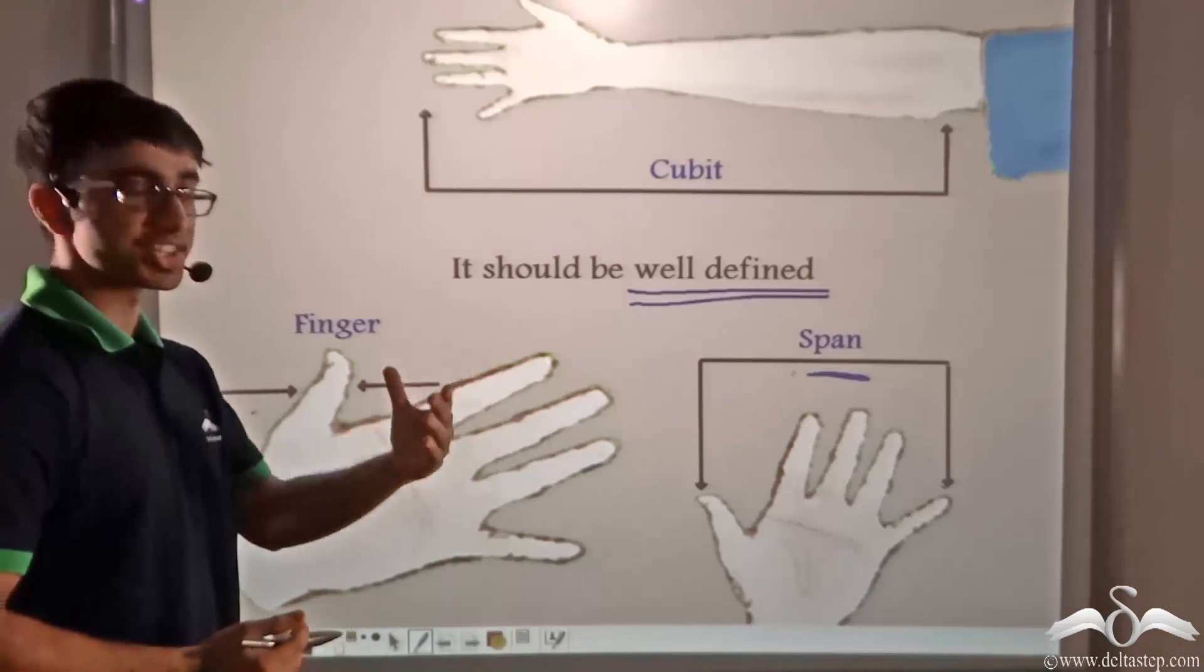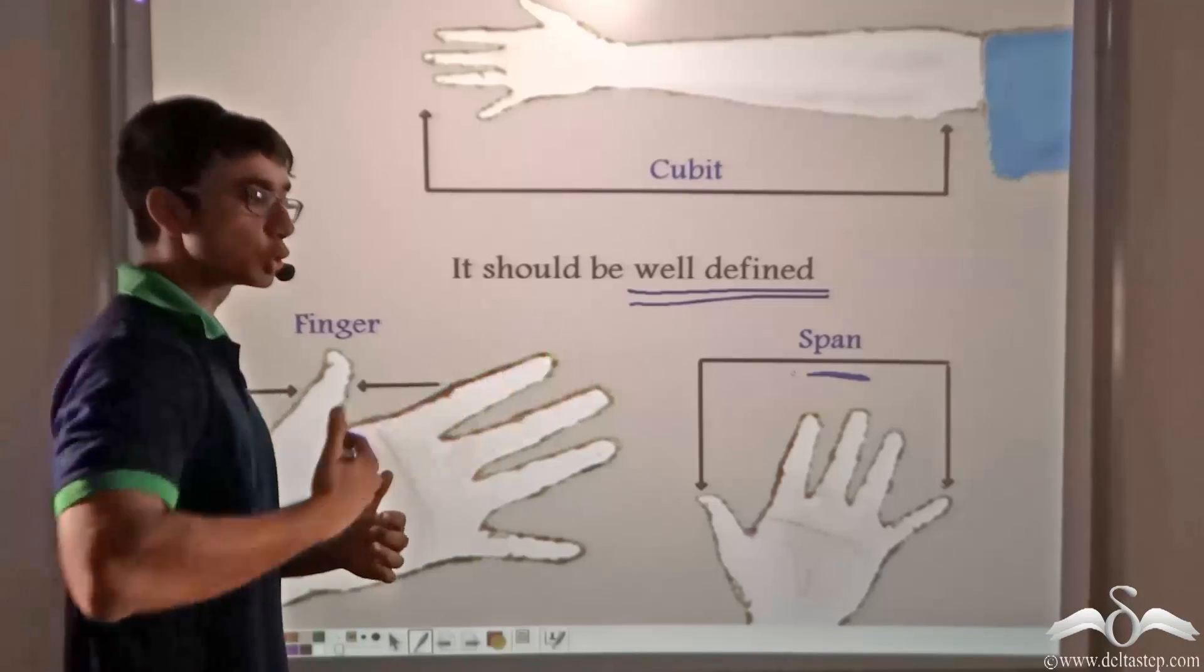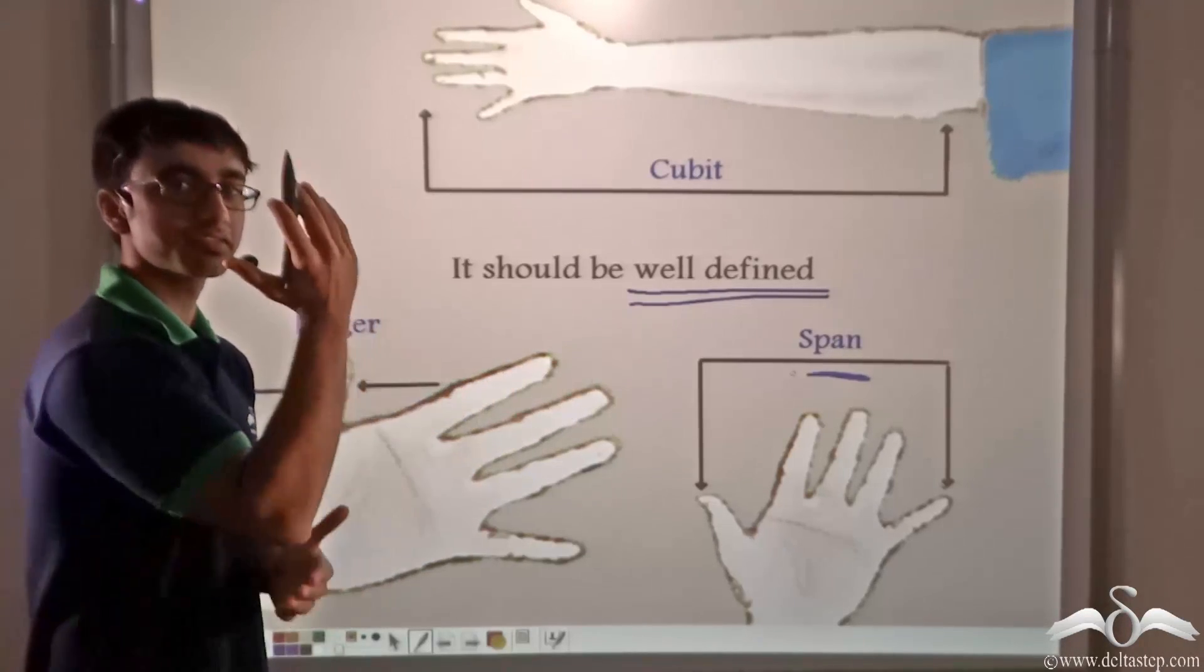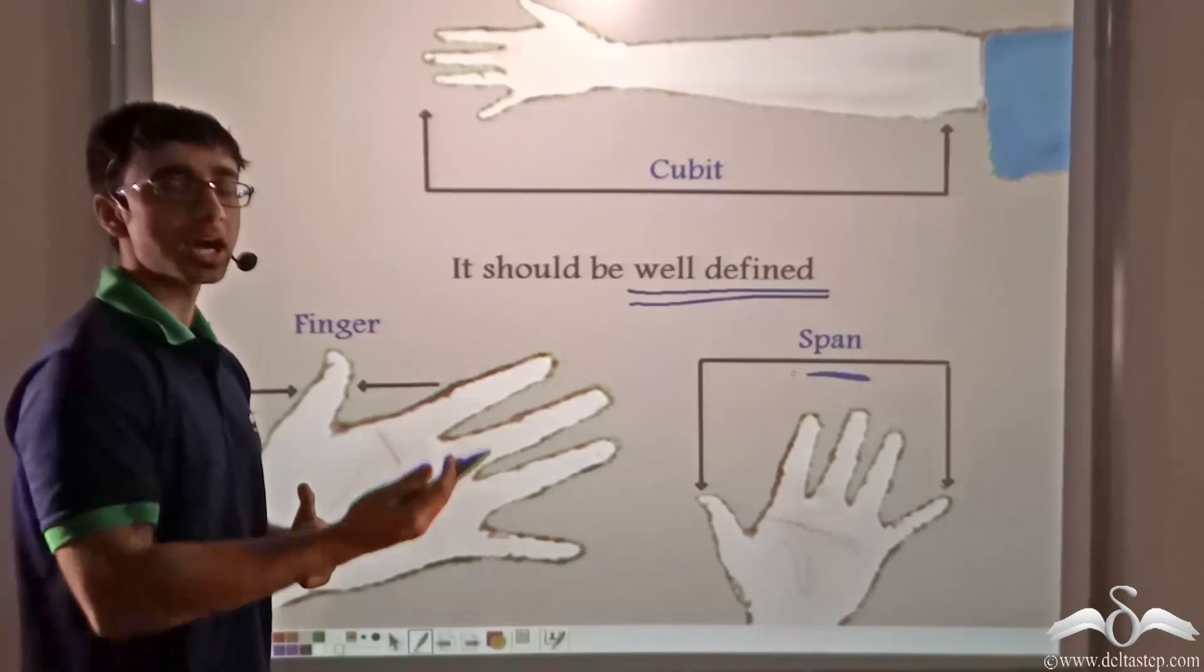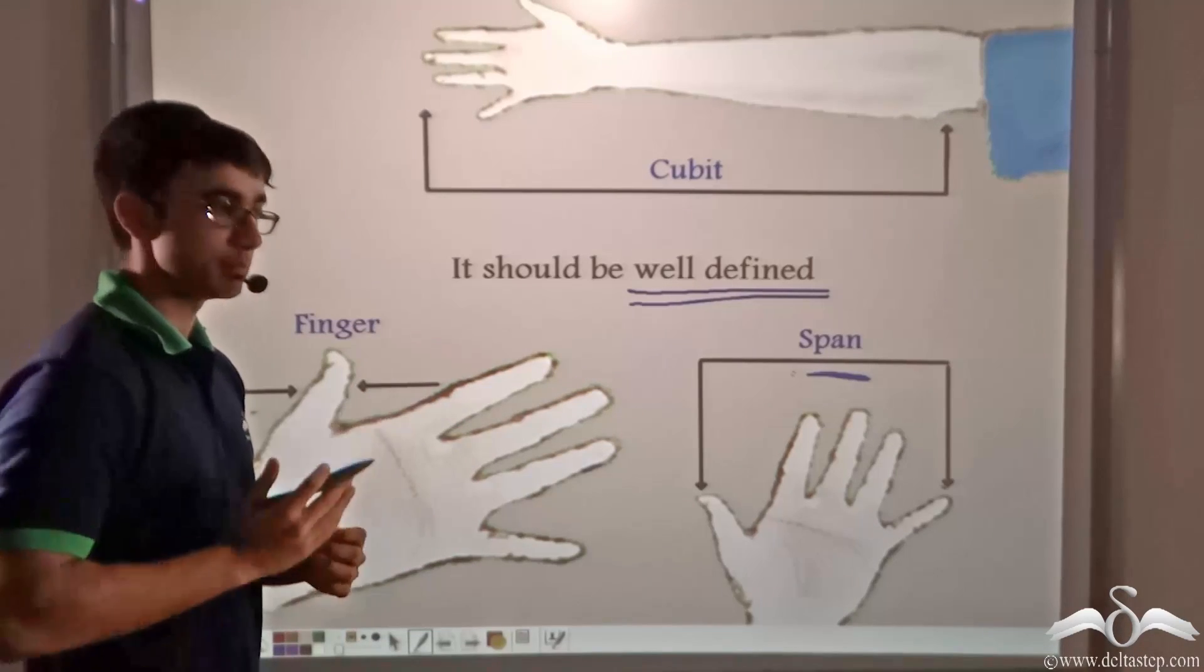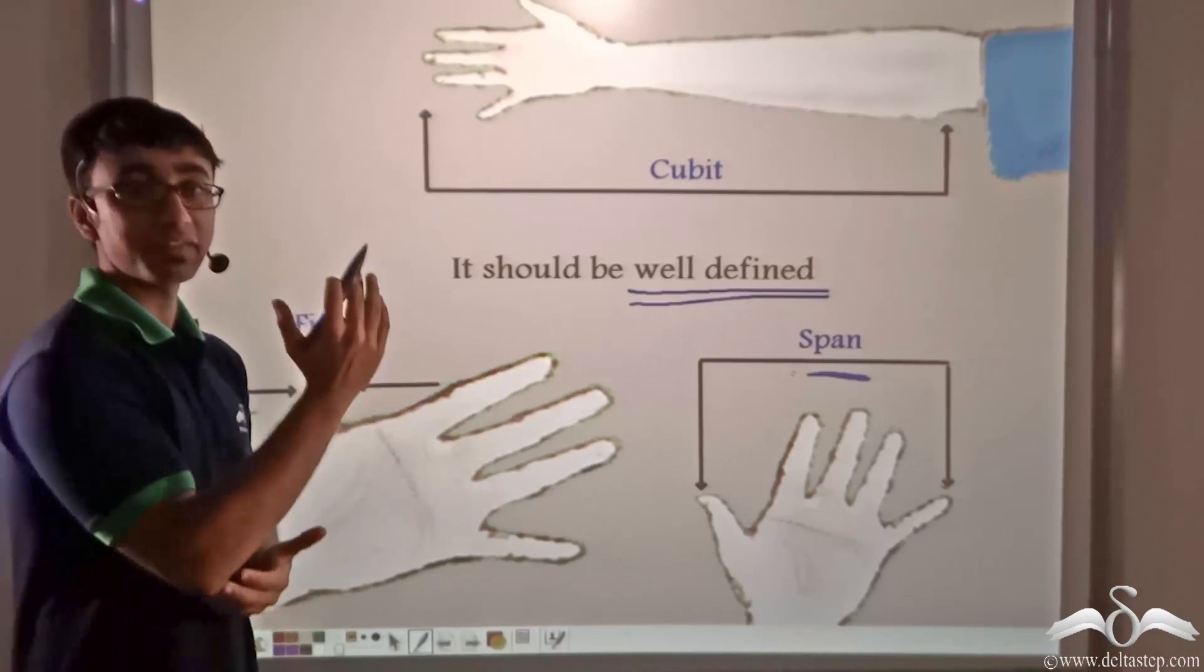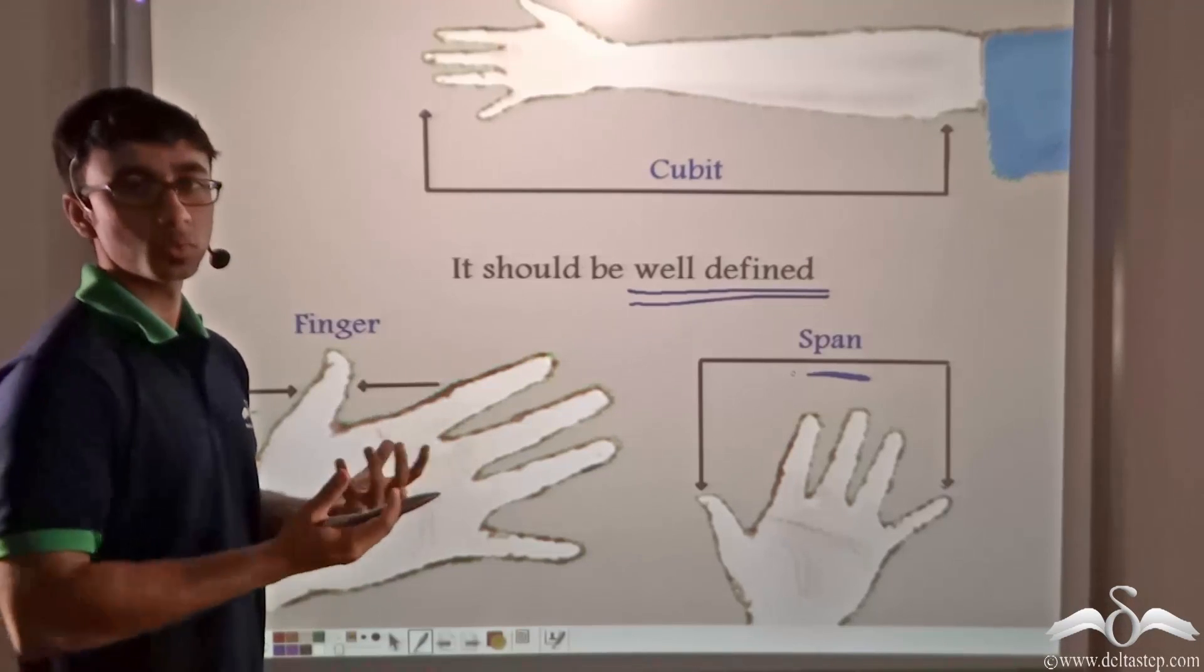So if one person measures the distance in between two points, let's say as five cubits and a much younger person measures the same distance and finds it to be ten cubits, what will they say?